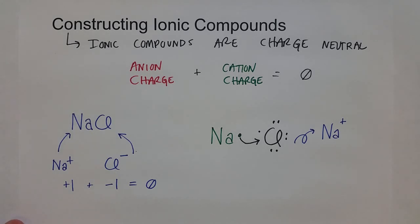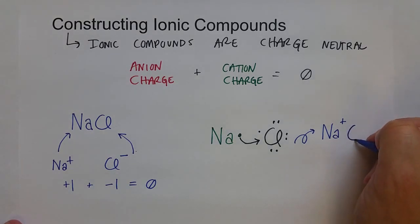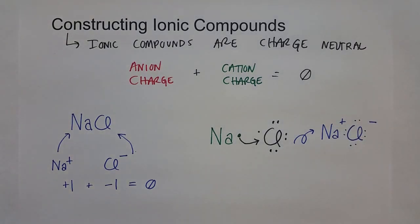Sodium has a positive one charge. The chloride now that just gained a valence electron has a negative one charge. And so it reacts in a one-to-one ratio.